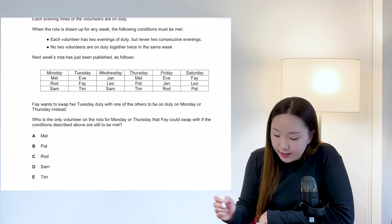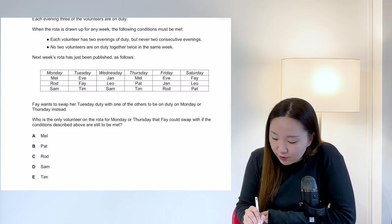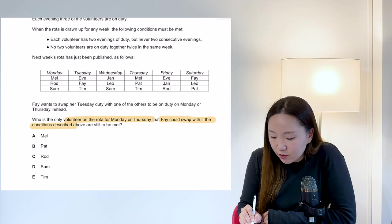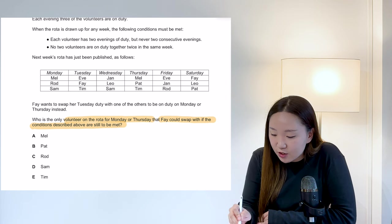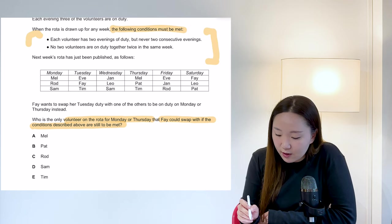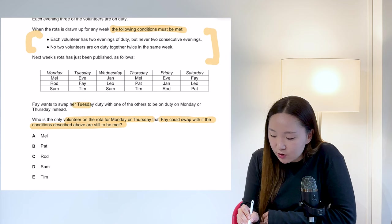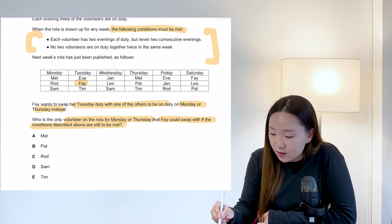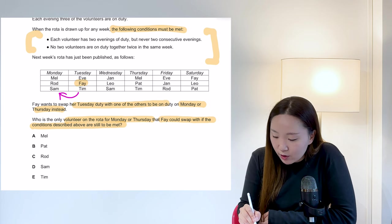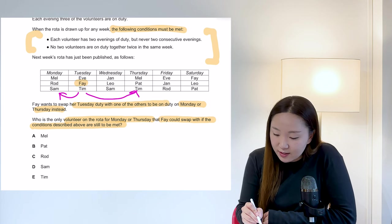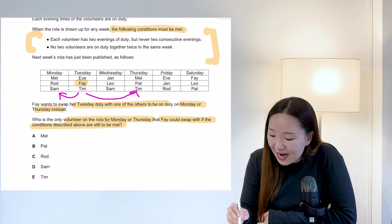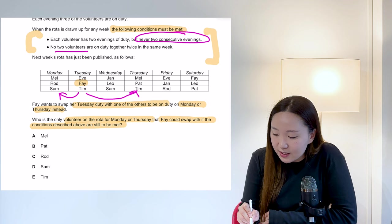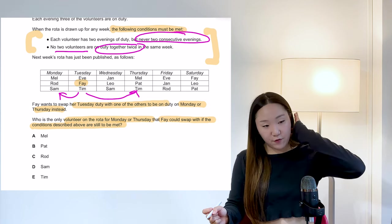Okay, so question 19 is asking who is the only volunteer on the rota for Monday or Thursday that Faye could swap with if the conditions described above are still to be met. The conditions are given here. So Faye wants to swap her Tuesday duty with one of the others to be on duty on Monday or Thursday. So Faye's here and she wants to trade either into that one or into that one. And the conditions are each volunteer has two evenings of duty, never two consecutive evenings, no two volunteers on duty together. So they have to be on different dates.